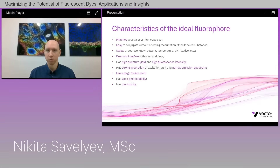An ideal fluorophore has high quantum yield and high fluorescence intensity to ensure bright and easily detectable signals. It has strong absorption of excitation light and narrow emission spectrum for clearer signal differentiation and reduced background noise. It also has a large Stokes shift to reduce the interference of excitation light.